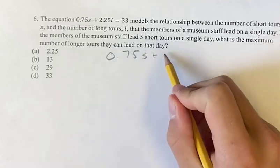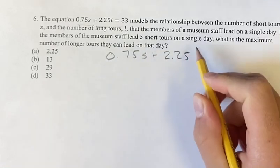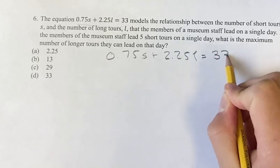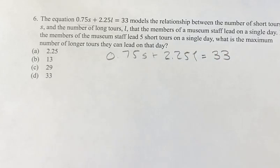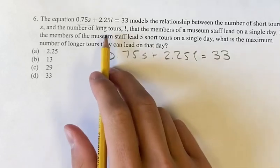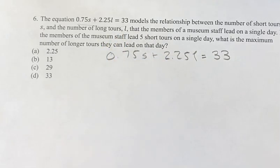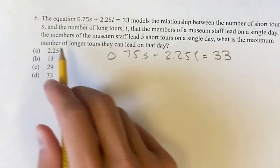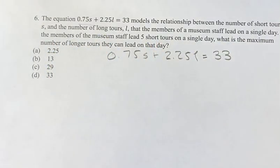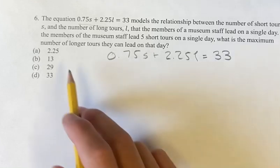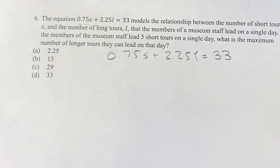0.75s plus 2.25l equals 33, and this is relating the number of short tours s and the number of long tours l that can be allowed on a single day. And so on a certain day if the members of the museum staff are leading five short tours, what is the maximum number of longer tours that they can lead on that day?